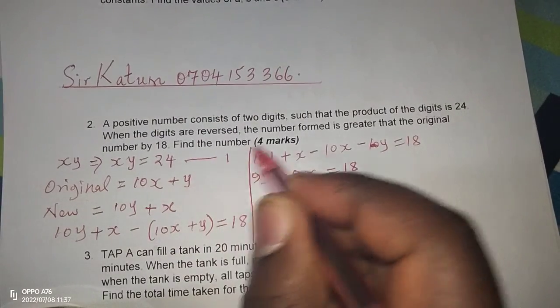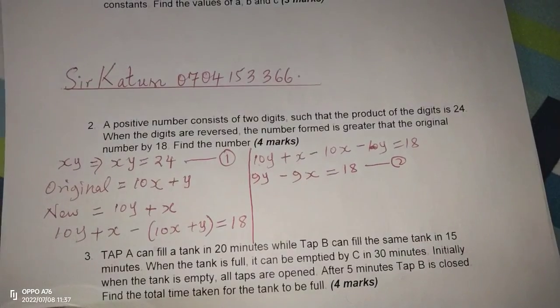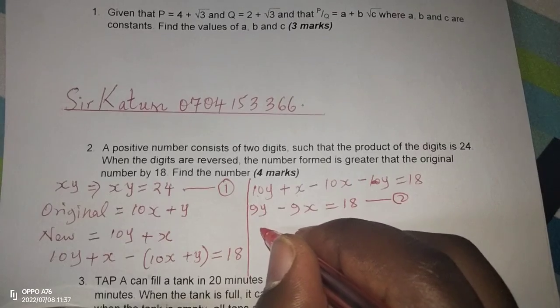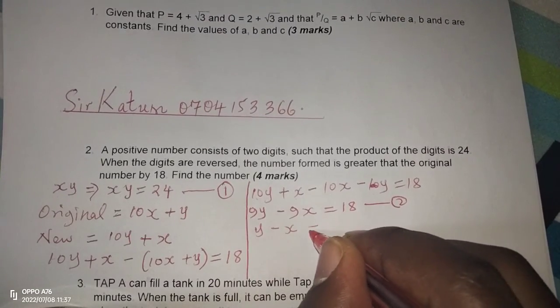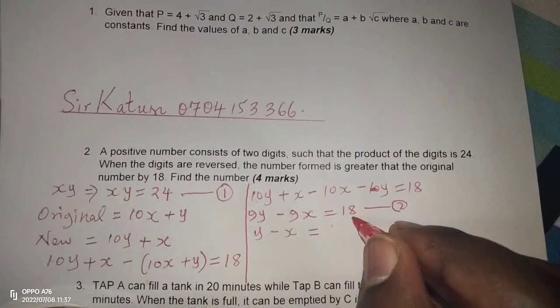This is our second equation, though we can have a simpler form, such that Y minus X equals 2 instead of 18.